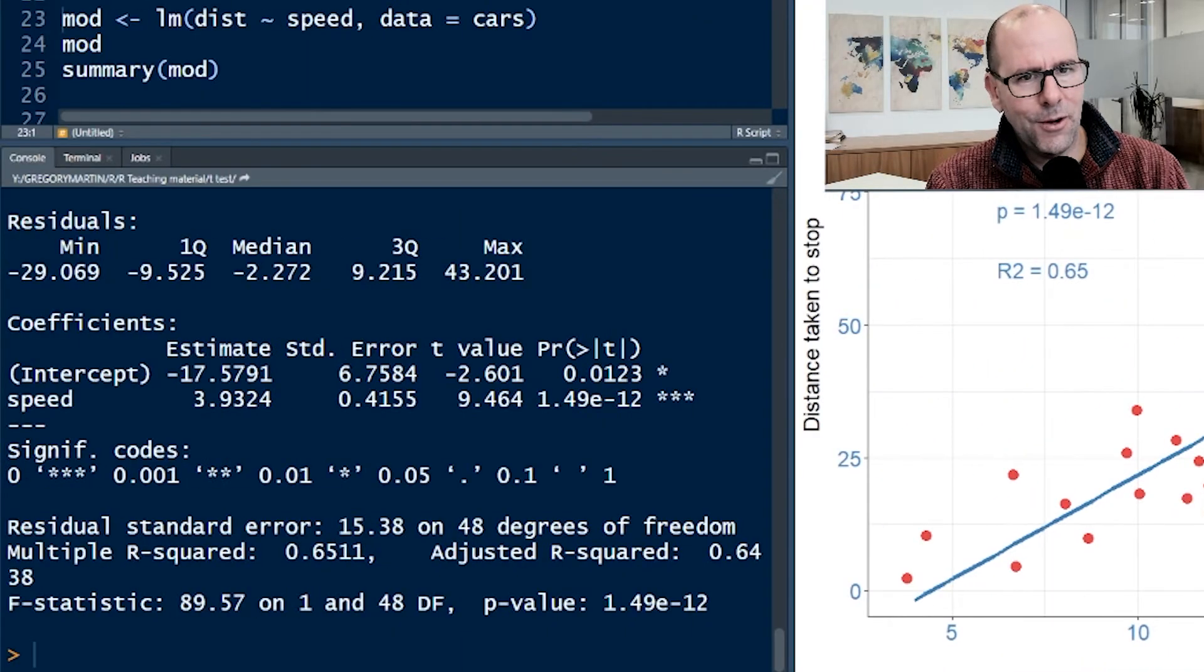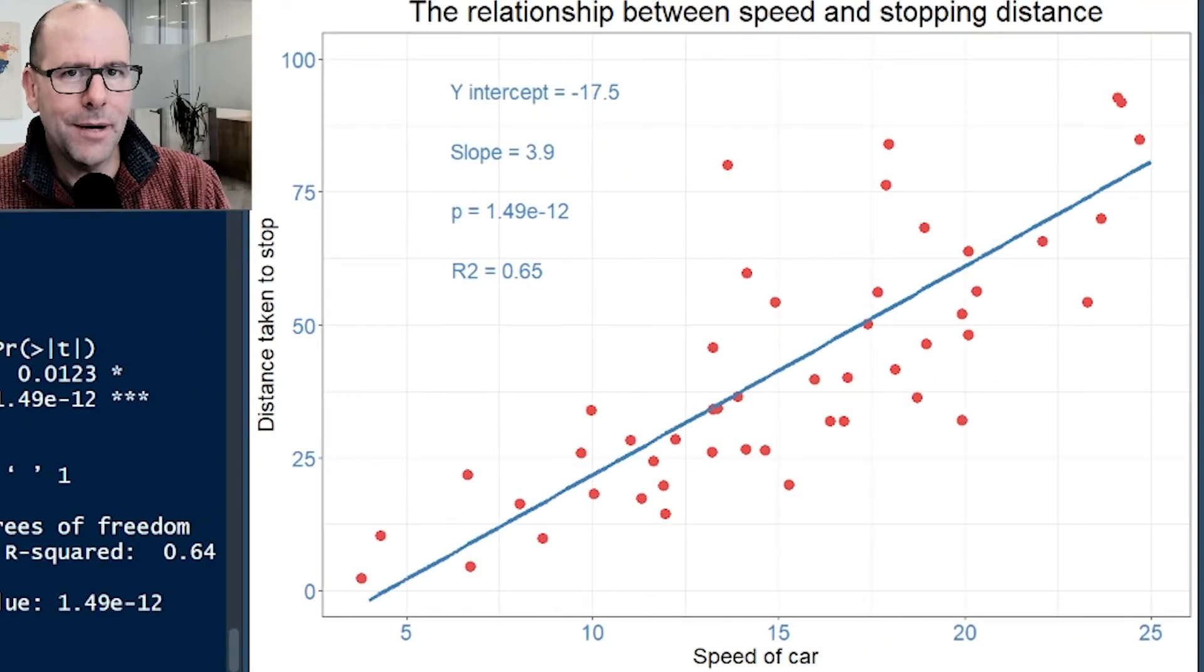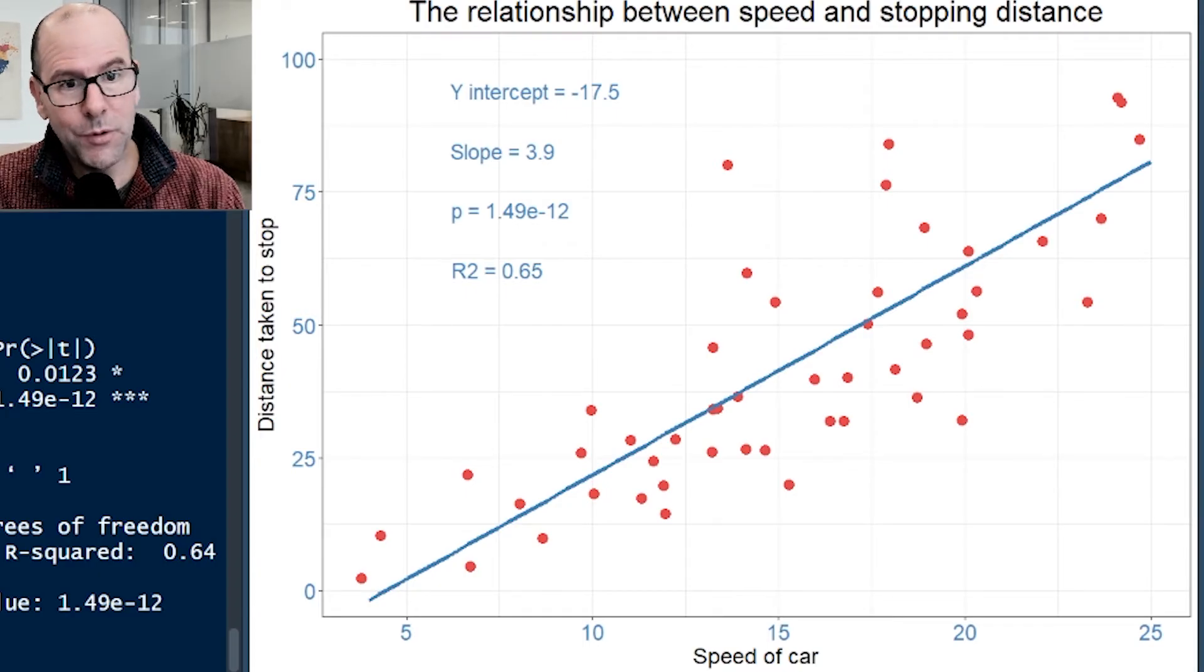We also get a y-intercept at the other coefficient, in this case minus 17.5. Keep in mind, very often in a linear model, the y-intercept is a meaningless number. We need the y-intercept because you can't draw the line without a slope and a y-intercept, but in the real world, very often it doesn't have any meaningful interpretation. A distance to stop can't be negative 17 meters. The y-intercept is the theoretical value of y when x is zero.